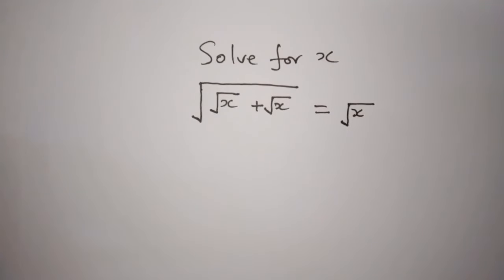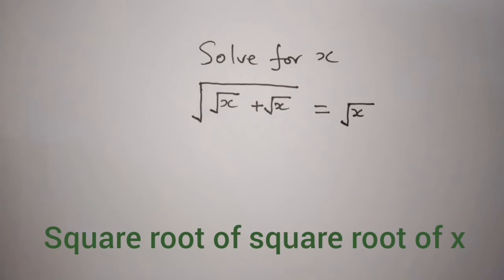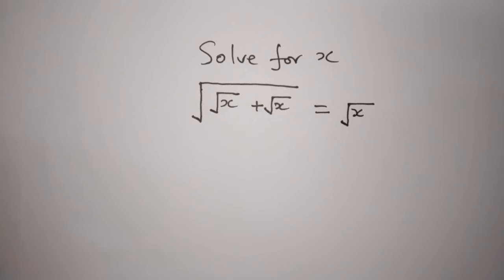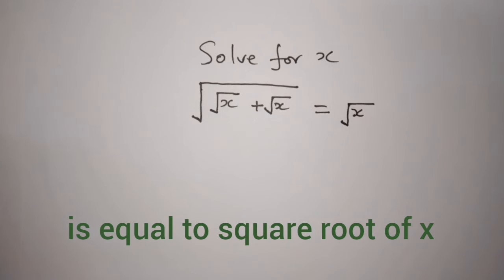Solve for x. Square root of x times square root of x plus square root of x is equal to square root of x.